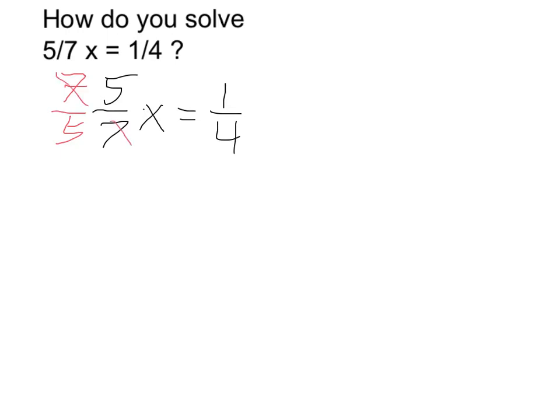The 7 cancels with the 7, the 5 with the 5 by cross-simplification. And to keep it balanced, I have to do the same thing to the other side. So I'm going to go ahead and multiply that by 7 fifths.